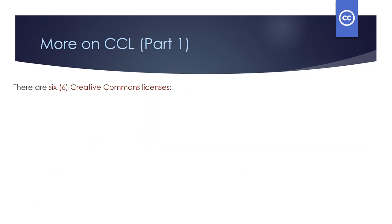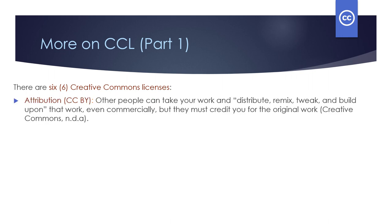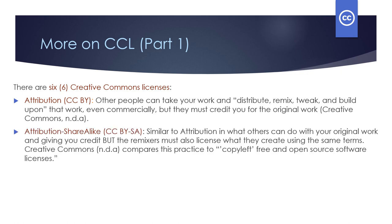There are six Creative Commons licenses. The first is Attribution, usually identified as CC BY. Public domain is the most permissive of copyright concepts; Attribution is the next most permissive license. Other people can take your work and distribute, remix, tweak, and build upon that work even commercially, but they must credit you for the original work. Attribution ShareAlike, known as CC BY-SA, is the license used for this presentation. Similar to Attribution in what others can do with your original work, but the remixers must also license what they create using the same terms.